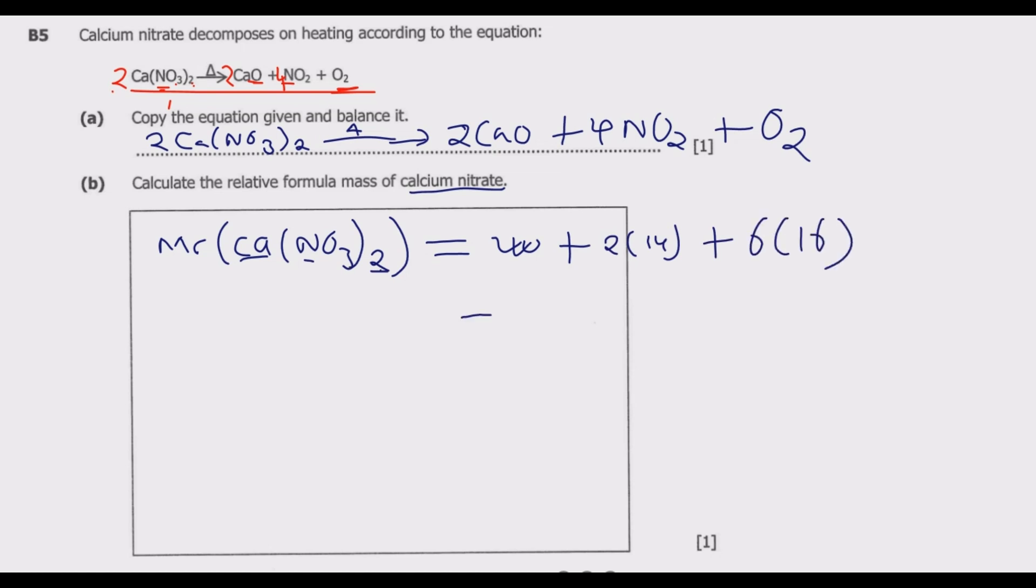Then we need to add this which is 40 plus 28, then plus 6 times 16 which is 96. Then we add these 3 to get 164 grams. So 164 grams is the relative formula mass of calcium nitrate.